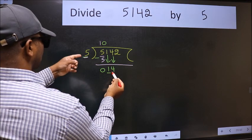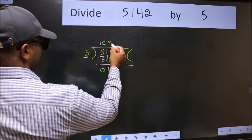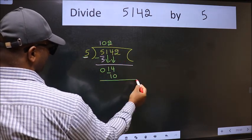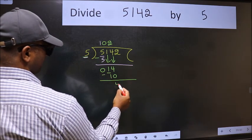A number close to 14 in the 5 table is 5 times 2 is 10. Now we subtract. We get 4.